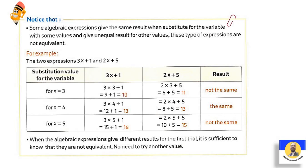Note: some algebraic expressions give the same result when you substitute the variable with some values, but give unequal results for other values. That's why you should try at least three values before concluding they are equivalent. For example, take 3x+1 and 2x+5 — when x=3: 3×3+1=10 and 2×3+5=11 — not the same, so these two expressions are definitely not equivalent.